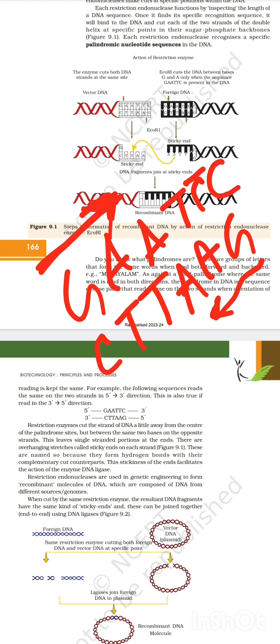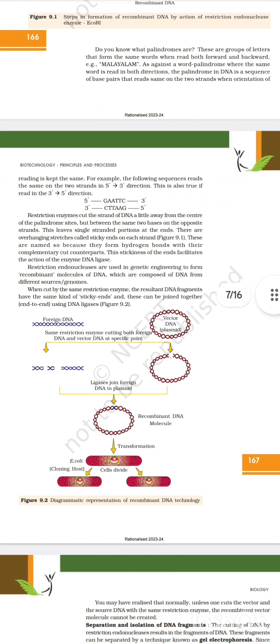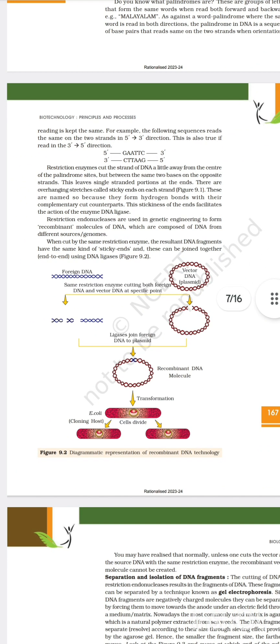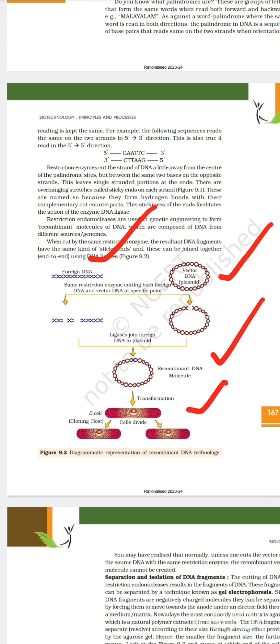Restriction endonucleases are used in genetic engineering to form recombinant DNA molecules composed of DNA from different sources. When cut by the same restriction enzyme, the resultant DNA fragments have the same kind of sticky ends and are joined together using DNA ligase. The diagram represents the recombinant DNA technology: foreign DNA is added to a vector plasmid, joined using ligase, then transformation introduces the R-DNA into a new host cell, which multiplies to form multiple copies of the recombinant DNA.